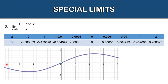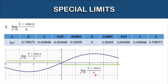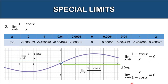Looking at the graph of our function: here are the values of x from the left of zero and the curve of our function is approaching zero — this is the one-sided limit from the left. On the other hand, we have values of x approaching zero from the right, and here is the graph from the right of zero. By evaluating, the limit of 1 minus cosine x all over x as x approaches zero is equal to zero. Also, the limit of x all over 1 minus cosine x as x approaches zero is also equivalent to zero.